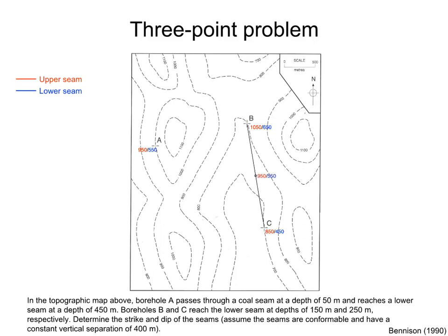A line from borehole B to borehole C decreases in elevation south from 1050 to 850 meters on the upper seam or 650 to 450 meters on the lower seam. The point halfway along this line must have an elevation of 950 meters on the upper seam or 550 meters on the lower seam. This line is a strike line on the upper or the lower seam. A line along borehole A and the point halfway between boreholes B and C has an elevation of 950 meters on the upper seam or 550 meters on the lower seam.